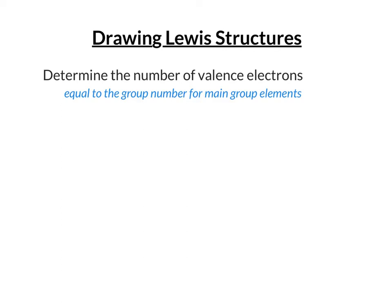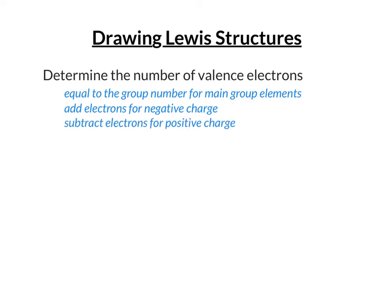Next, consider whether there is a charge. If there's a negative charge, that substance has extra electrons, so you add electrons equal to the charge — negative one means add one, negative two means add two, and so on. If there's a positive charge, you've lost valence electrons, so you subtract electrons equal to the charge — positive one means subtract one, positive two means subtract two.